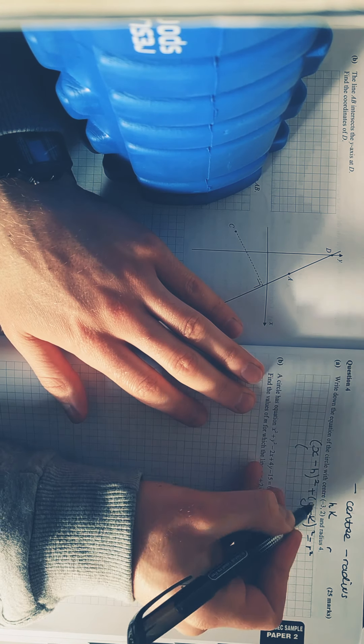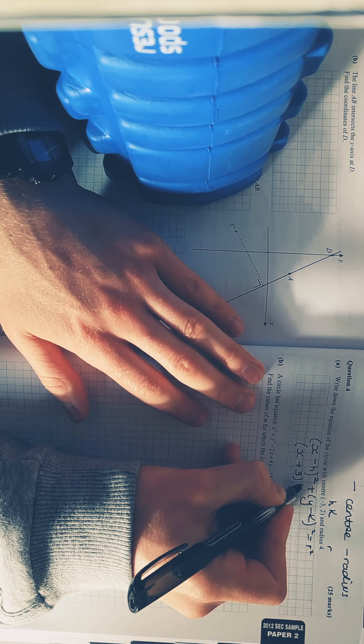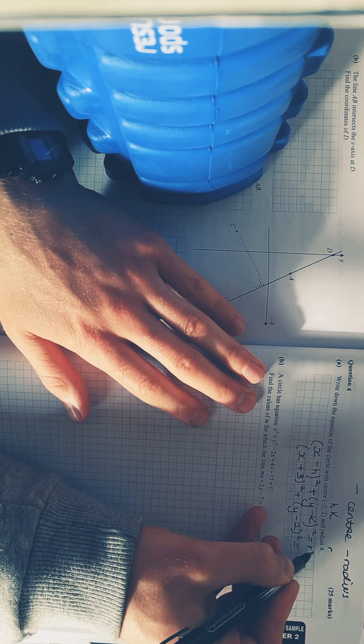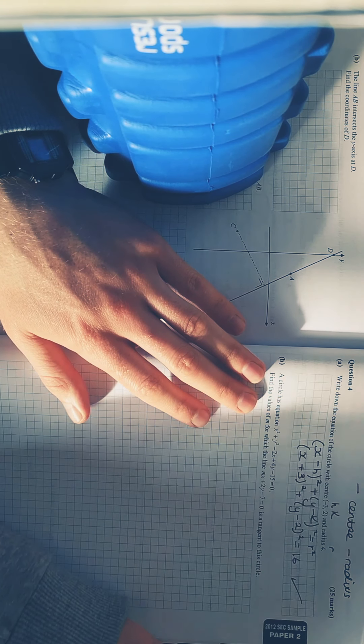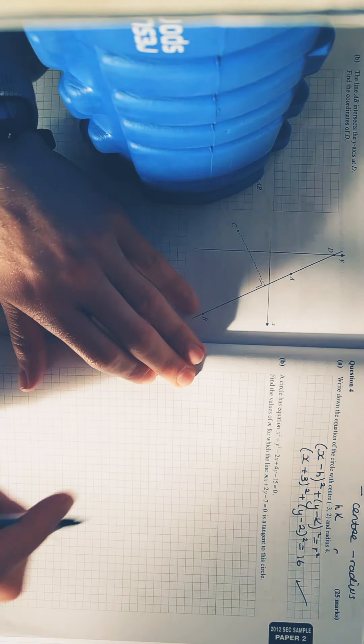Throw it into that. So, x minus minus 3 is plus 3 squared plus y minus k minus 2 squared is equal to 4 squared, which is 16. Don't need to multiply it out. As you see every year, just leave it like that.